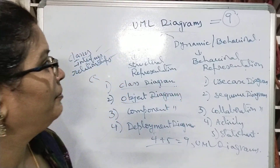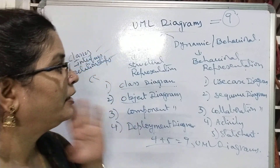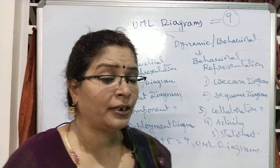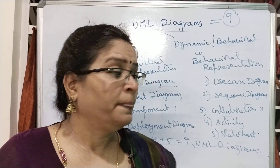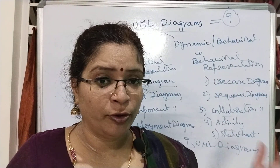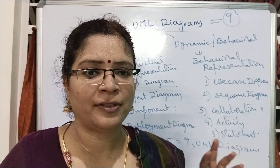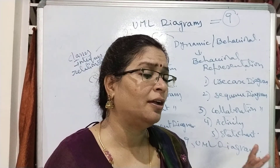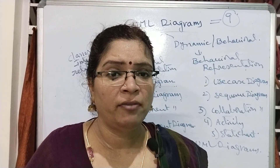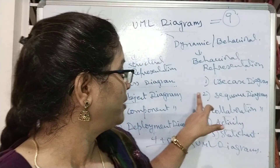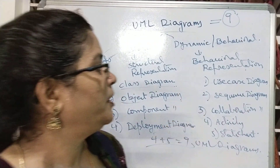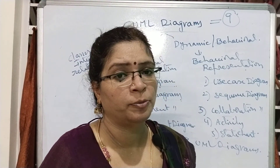Now we are shifting to the dynamic diagrams. Unlike the static diagrams, the dynamic diagrams are different — they can have some ongoing process, some set of changing views, not structural things. They always represent dynamic things, which is why they are called dynamic or behavioral diagrams. The behavior of the system is not static — it is always changing. That behavioral description can be represented with the help of behavioral diagrams. Behavioral diagrams and dynamic diagrams are the same.